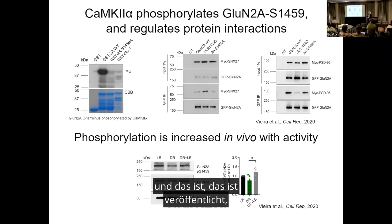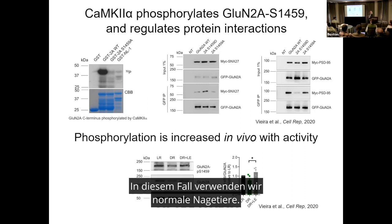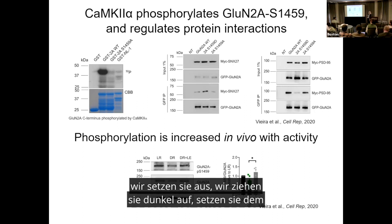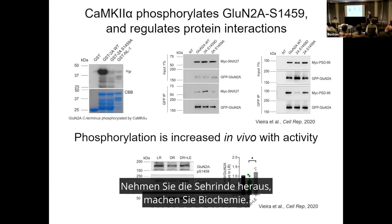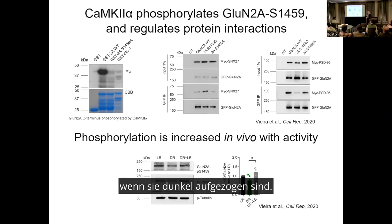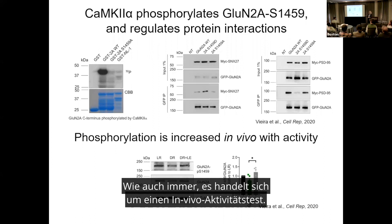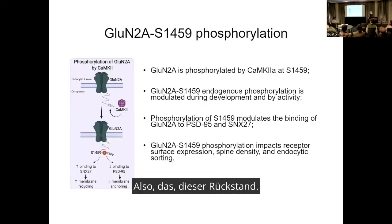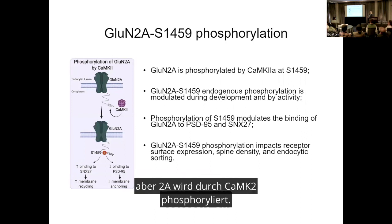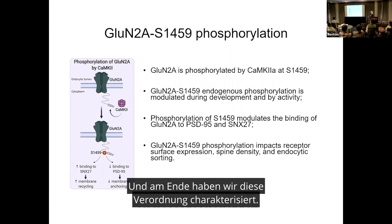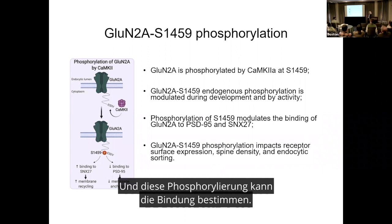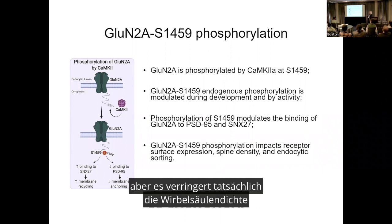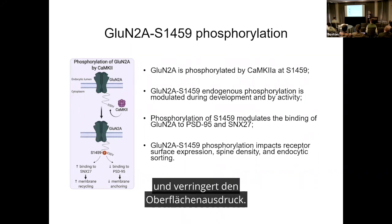We also made a phospho-antibody — this is published. We use normal rodents, dark-rear them, expose them to light, take out the visual cortex, and do biochemistry. You can see an increase in phosphorylation when you expose them to light — it's an in vivo activity assay. So GluN2A is phosphorylated by CaMKII; the only reason we looked at it was because it was in ClinVar. We characterized this regulation, showed it's phosphorylated in vivo, and that phosphorylation can dictate binding. It actually decreases spine density and surface expression.